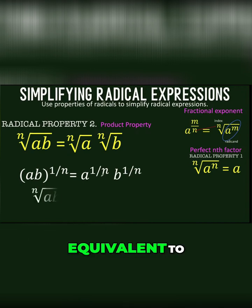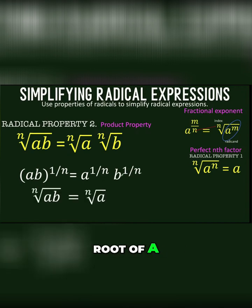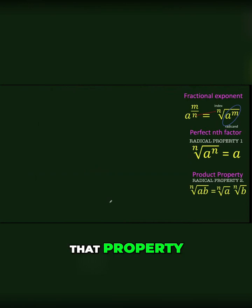And a raised to 1 over n is equivalent to the n-th root of a. b raised to 1 over n can be written as the n-th root of b. So that shows that if you have the n-th root of a times b, that is equal to the n-th root of a times the n-th root of b, applying our laws of exponents. Let's remember that property as well.